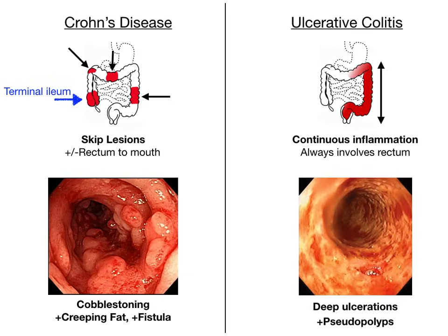In ulcerative colitis, you see deep ulcerations. The name literally means 'ulcer-forming colon inflammation' — 'colitis' means inflammation of the colon, and 'ulcerative' means forming ulcers. So you see deep ulcerations in the mucosa and submucosa in ulcerative colitis. You also see the formation of pseudopolyps — that's a key buzzword for UC. To summarize: cobblestoning, creeping fat, and fistulas are features of Crohn's disease, while deep ulcerations and pseudopolyps are features of ulcerative colitis.